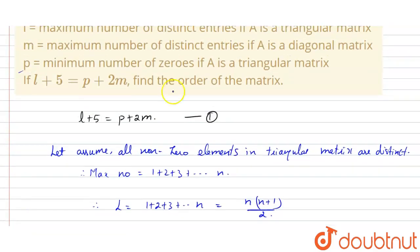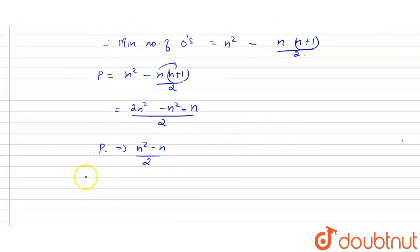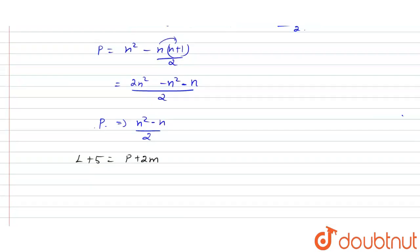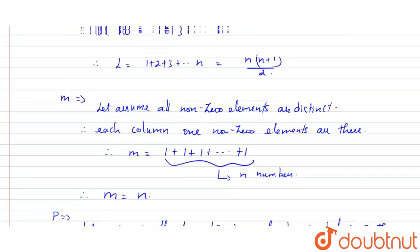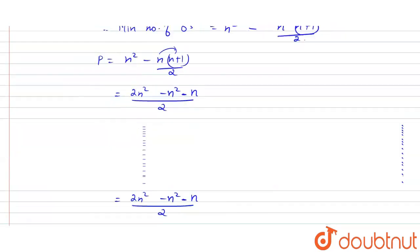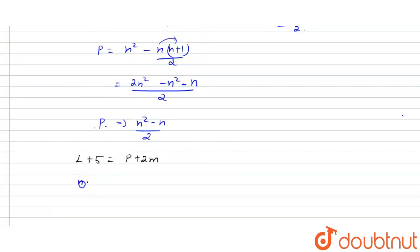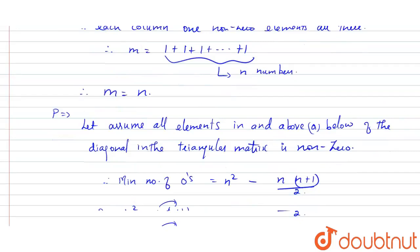Now I'm going to substitute all the values into equation one: l + 5 = p + 2m. Substituting: n(n+1)/2 + 5 = (n² − n)/2 + 2n.